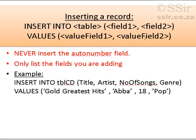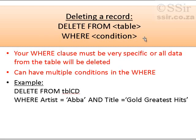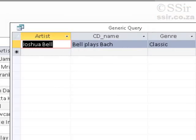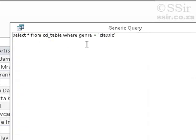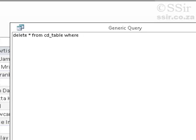It's time to delete a record from a table, but you must know that this is permanent, so be careful. The structure is: DELETE FROM the table WHERE and your condition. We could go and delete our Joshua Bell entry that we've just made. We know that genre is classic, so we change this to: DELETE all FROM CD table WHERE genre equals classic.